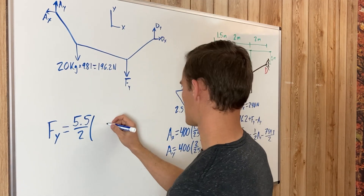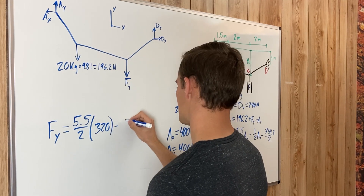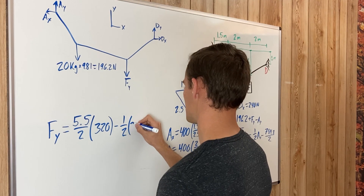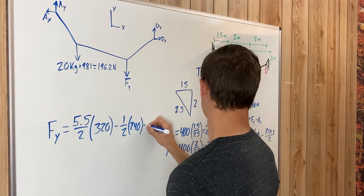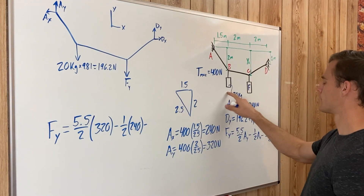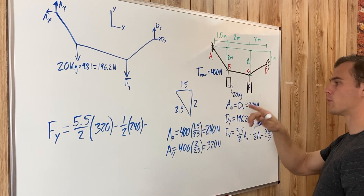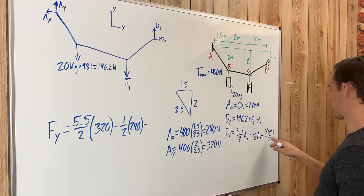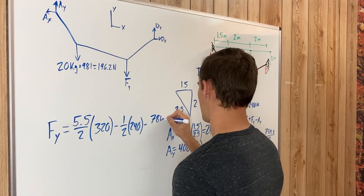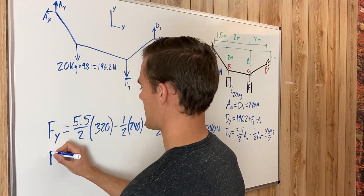Plugging in the values: A sub y was 320 newtons, minus (1/2) times A sub x which is 240, minus the moment from the 196.2 N weight which was 4 meters away giving 196.2 times 4 equals 784.8, also divided by 2. Solving this out gives F sub y equals 367.6 newtons.